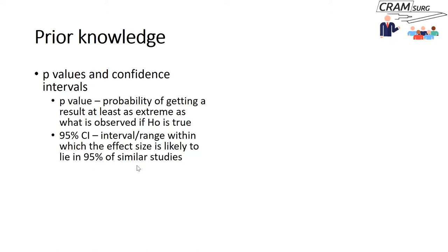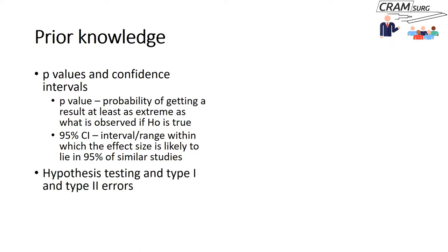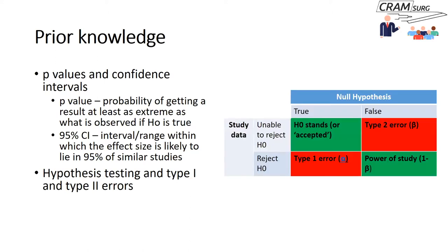We talked in detail about these two concepts before. We also discussed hypothesis testing — the null hypothesis and type 1 and type 2 errors. Type 1 error is the error we commit when we reject a null hypothesis that is actually true. Type 2 error is when a null hypothesis is false but the study is unable to reject it. The inverse of type 2 error is what we call power — the ability to reject the null hypothesis when it is in fact false. Power = 1 minus type 2 error.